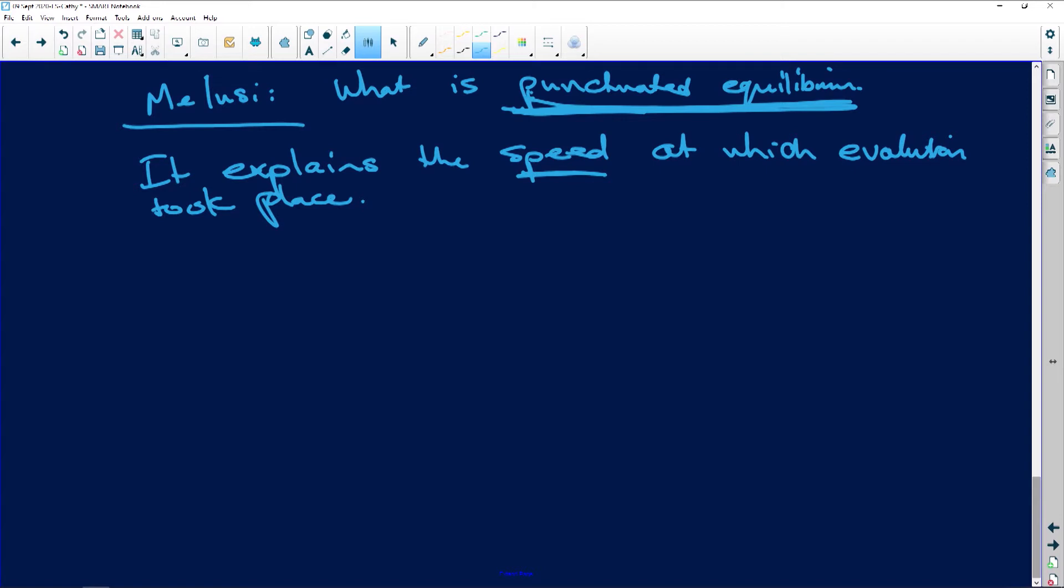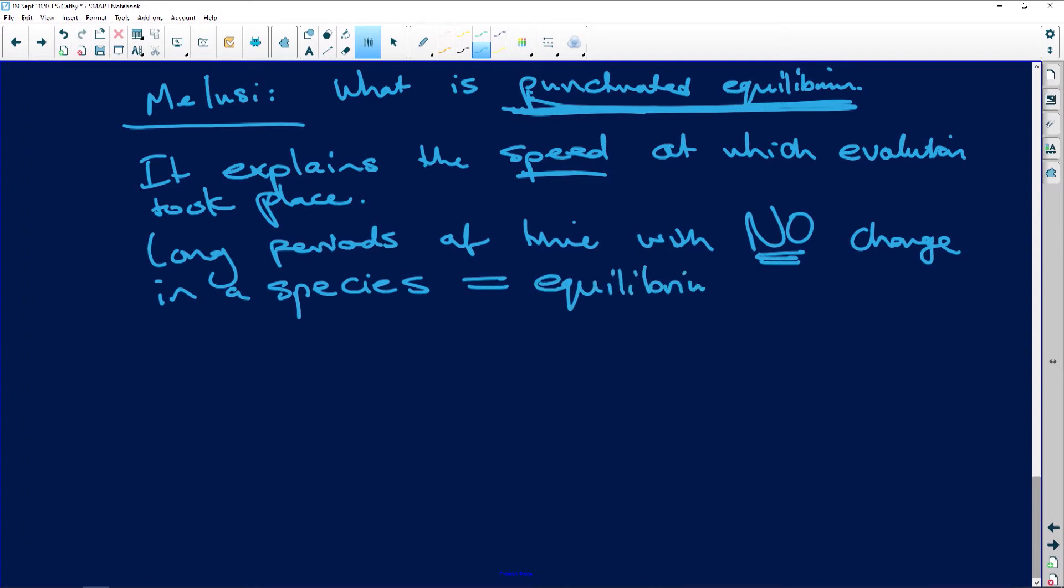So you have long periods of time, the speed at which evolution took place with no change in a species, and that is called your equilibrium. There is no change, and that is your equilibrium.